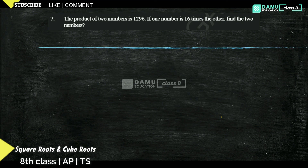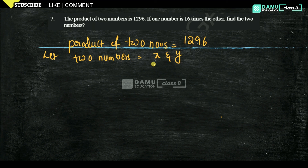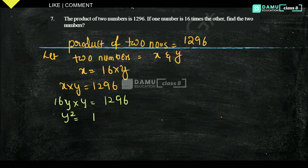In this module we are going to discuss the 7th question. The product of two numbers is 1296. If one is 16 times the other, find the two numbers. Let the two numbers be x and y. One is 16 times the other means x equals 16 times y. The product x into y equals 1296, so substituting: 16y into y equals 1296, giving 16y squared equals 1296, so y squared equals 1296 divided by 16 equals 81.